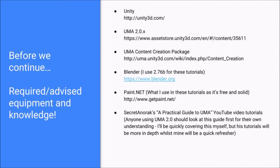Before we continue, the things you'll need: obviously you will need Unity — I'm assuming you already have that. You'll want UMA 2.0; at the moment it's version 2.0.5. This can be found easily in the asset store on Unity 3D. You'll also need the content creation package, which there should be a link for somewhere on this video. Blender — we'll be using version 2.76B for these tutorials; at the moment it's the most recent, so it's ideal.